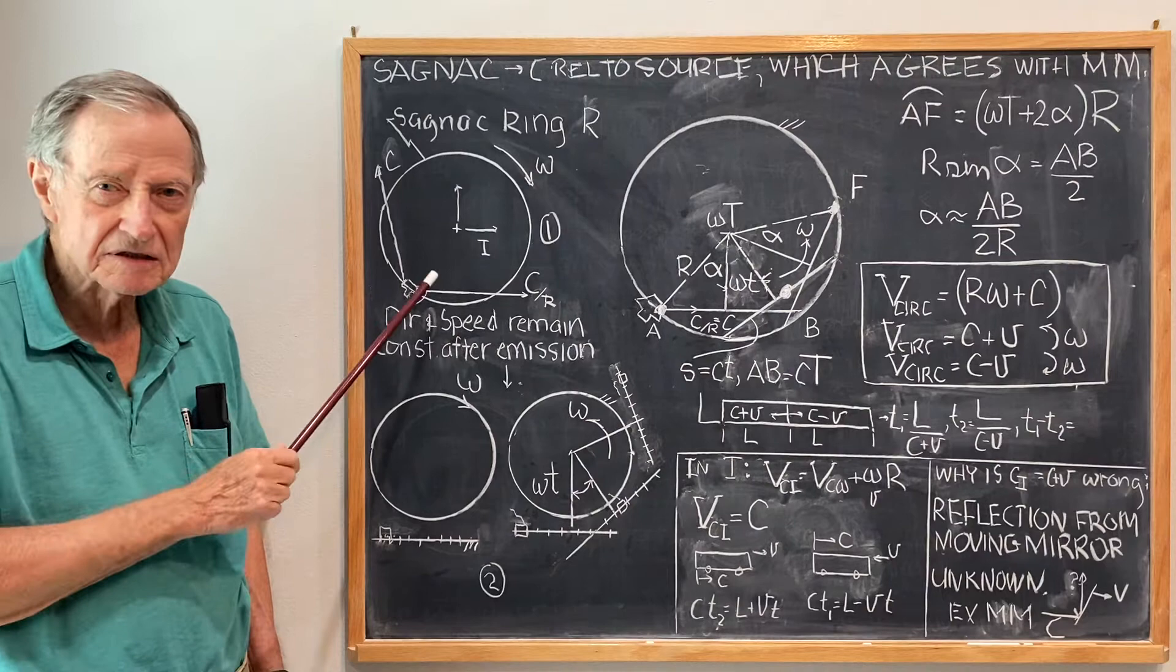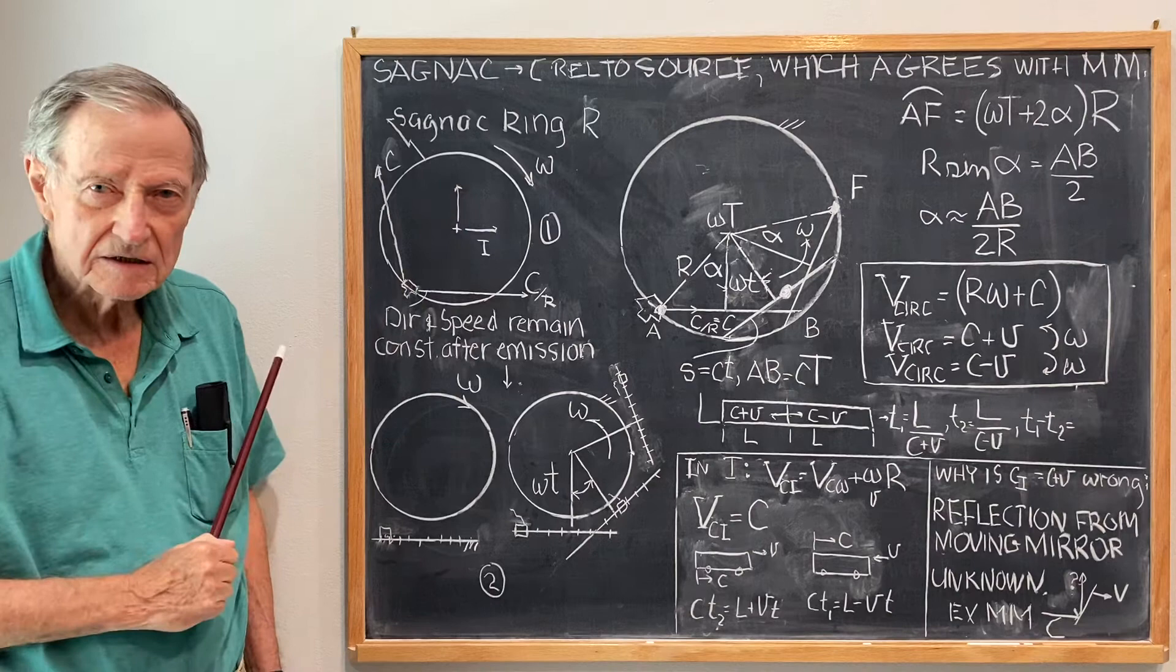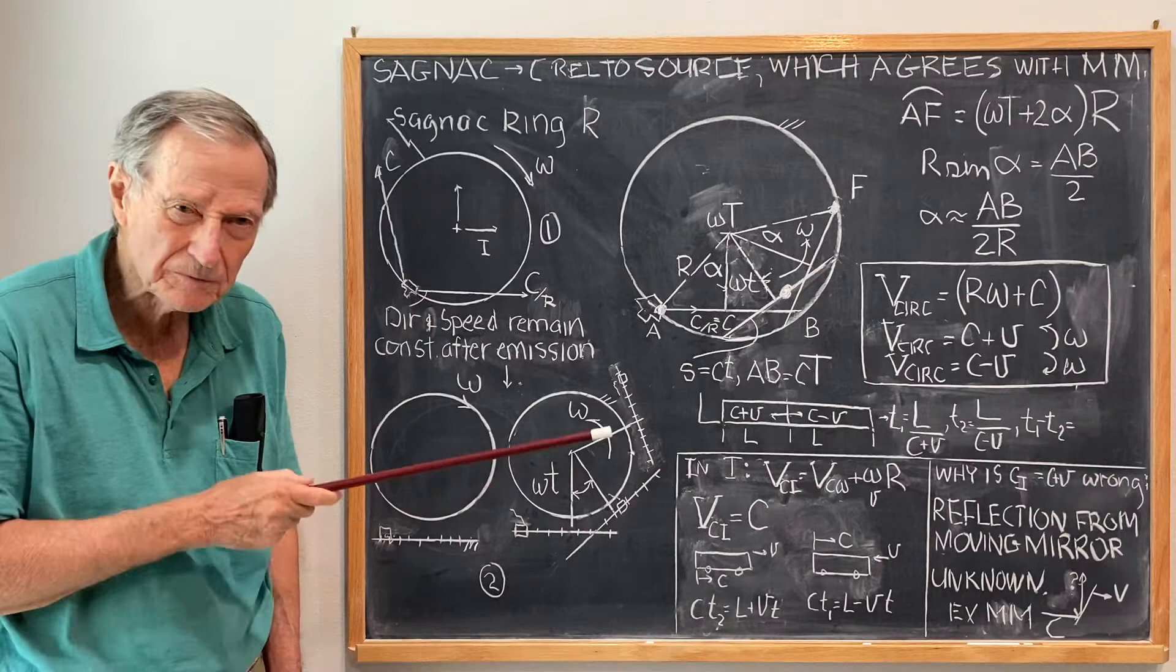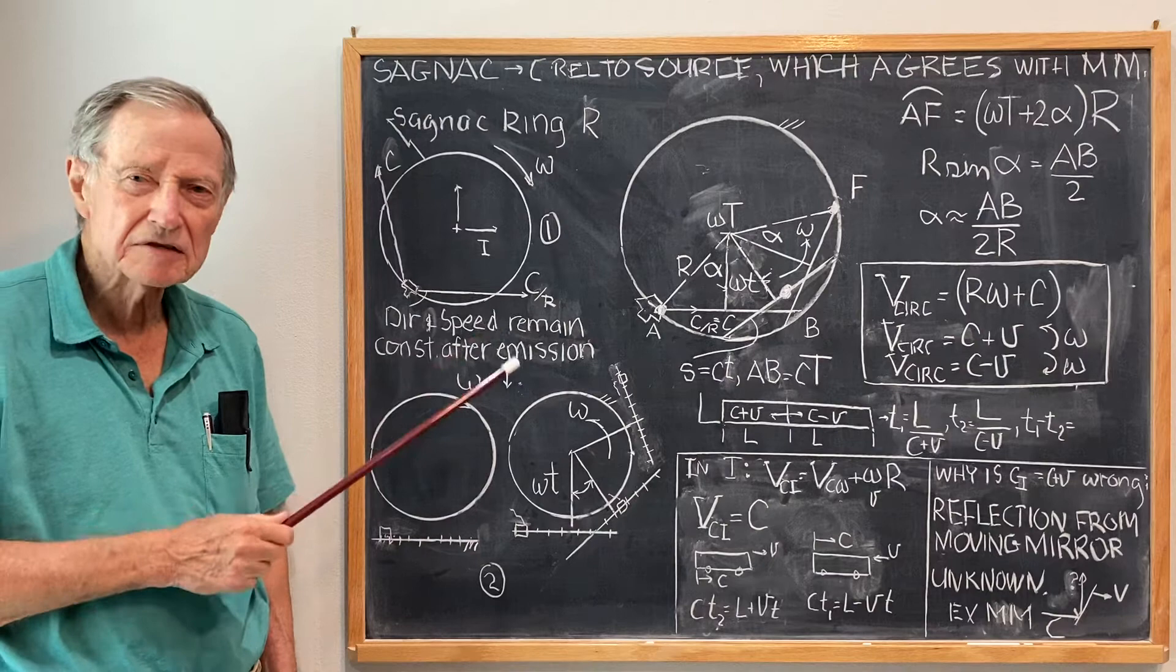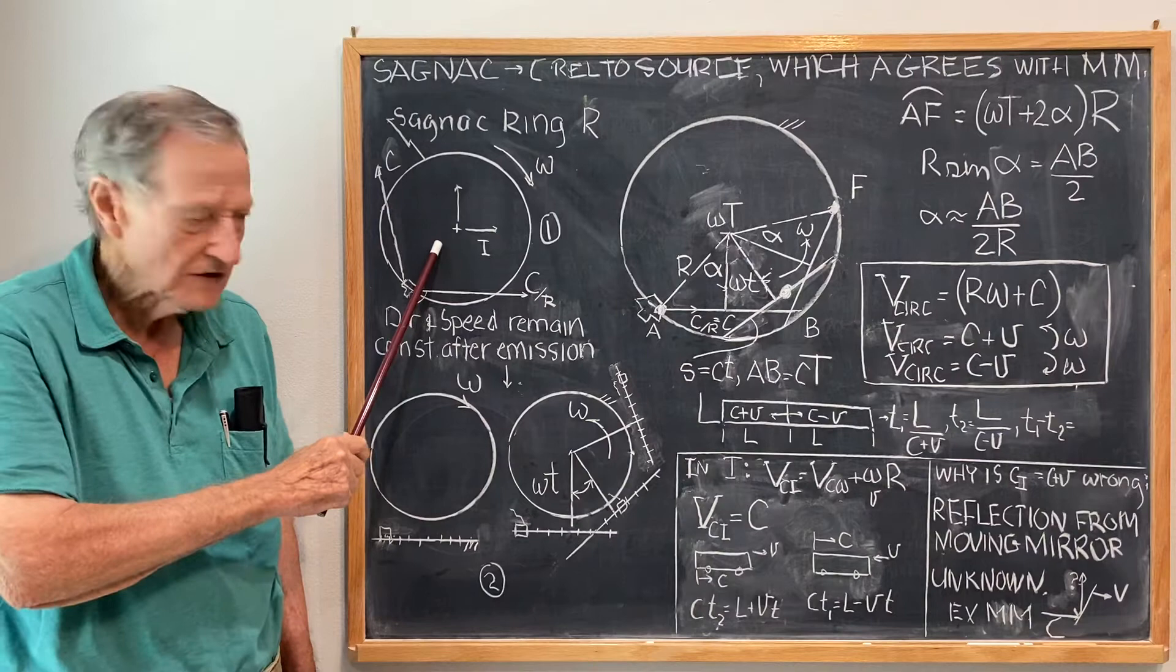Now, the object of the analysis is to find out what the difference in time is between the two circulating photons. It's assumed and it's a basic physical assumption of the experiment that the instant the photons are emitted, they travel with constant speed in a straight line with respect to the inertial reference frame.